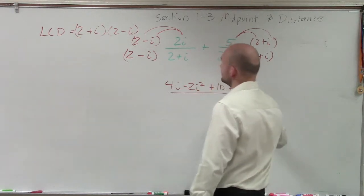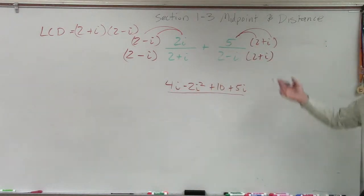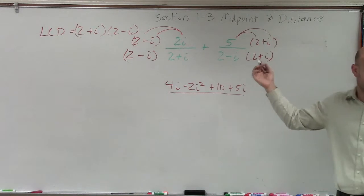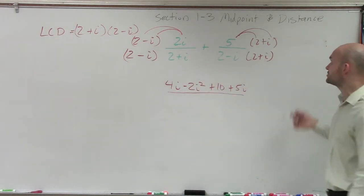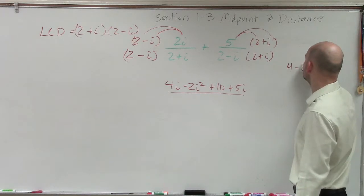In the denominator, I multiply these out, and I can actually multiply my LCD, combine them out, and we see that this is really a difference of two squares, right? It's really the LCD as a binomial times its conjugate, which is going to be 4 minus i².